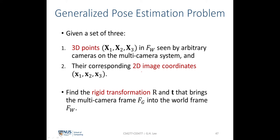Suppose we are given three sets of 2D-to-3D correspondences, which we denote as X1, X2, and X3 for the 3D points defined in the world reference frame FW, and their corresponding 2D coordinates X1, X2, and X3. The task of the generalized pose estimation problem is the same as for a pinhole camera: to find the rigid transformation R and T that brings the multiple camera frame FG into the world frame.